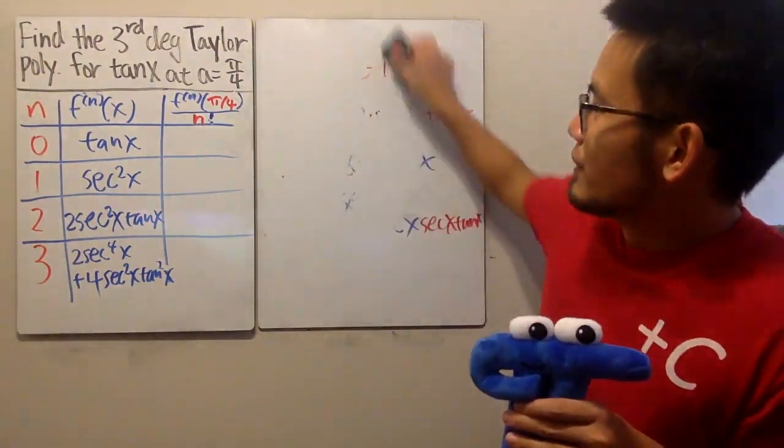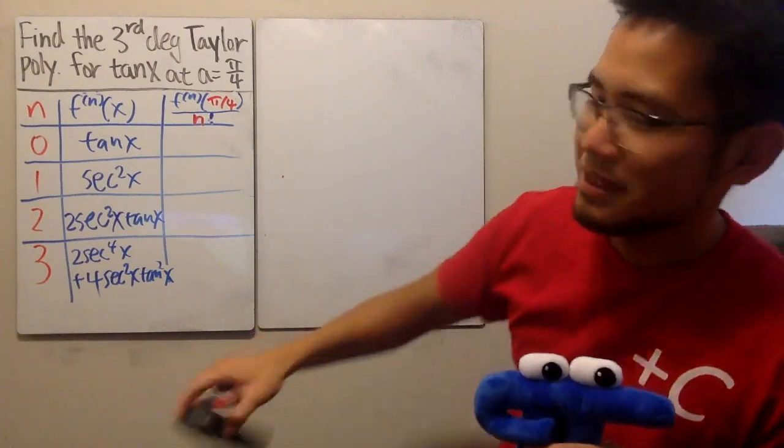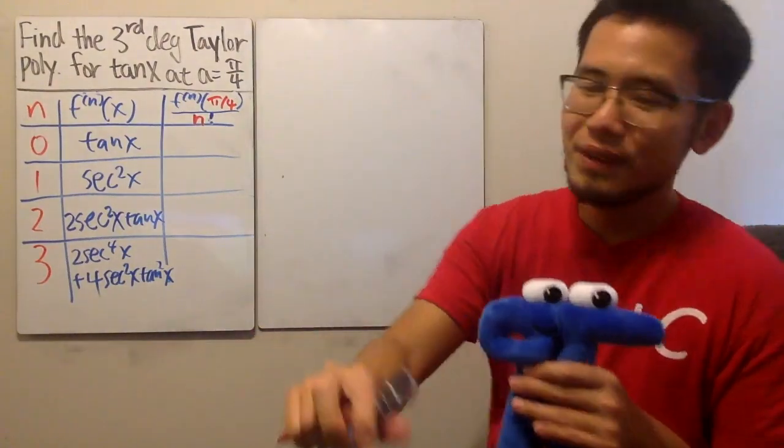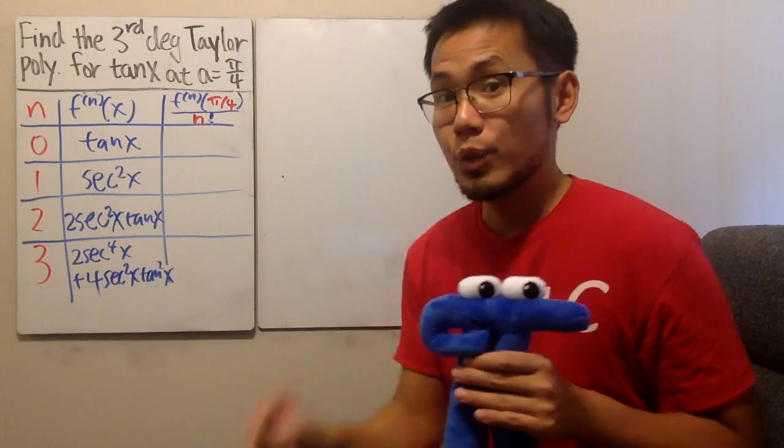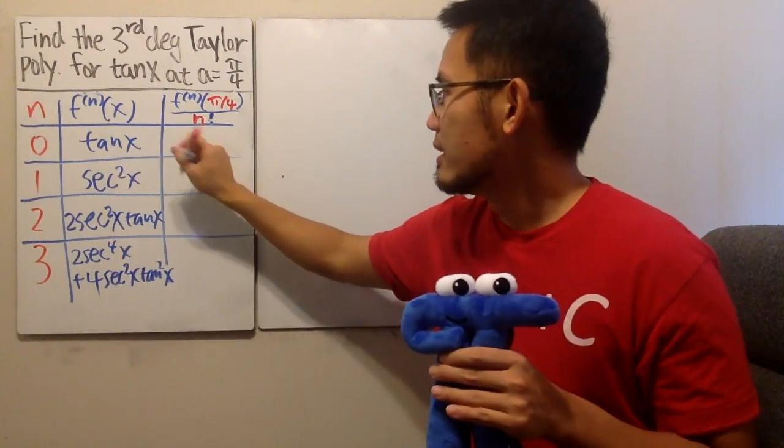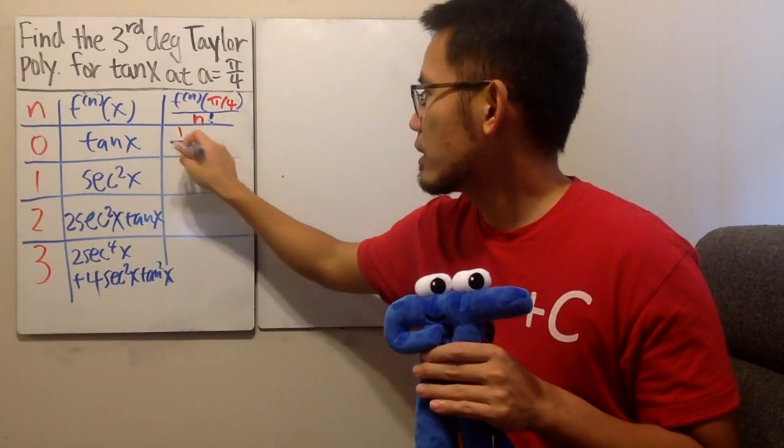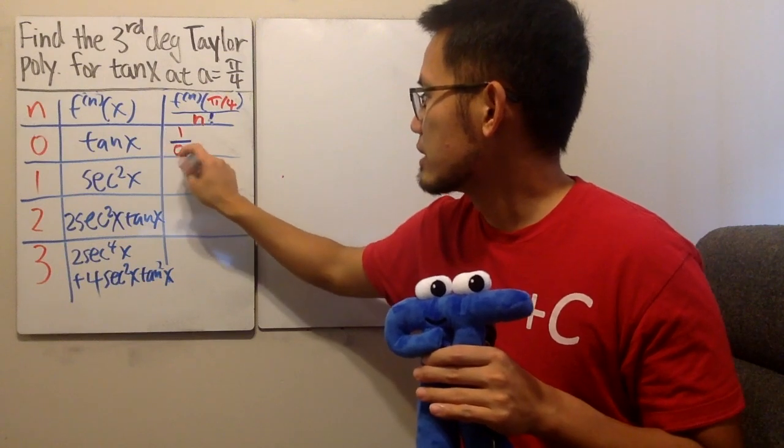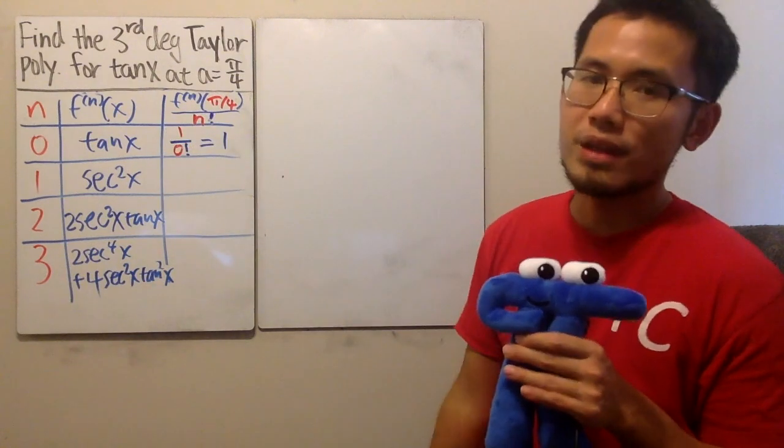Now it's time to figure out the things. So, first thing first, put pi over 4 into tangent, we get 1, so that's nice. And the first one is 1 over 0 factorial, so this is actually very nice. All in all, we get 1. Great.